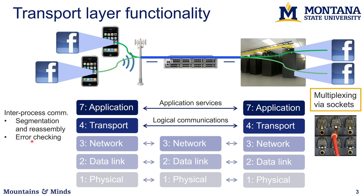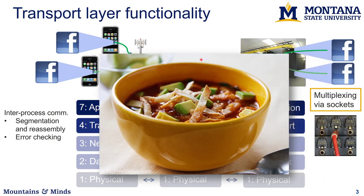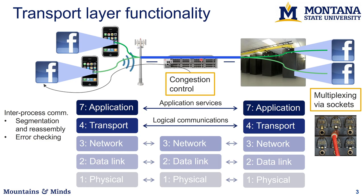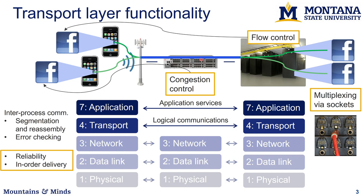The transport layer also provides multiplexing via sockets so that multiple connections can use the same set of links — you can think of it as a tortilla soup that gets scrambled together in the network but then magically unscrambled at the end with all the components visible. Depending on the transfer protocol, you may have congestion control — which limits data in response to losses in the network — and flow control, which limits data in response to the receiver's ability to receive at a particular rate. Some protocols also provide reliability and in-order delivery.